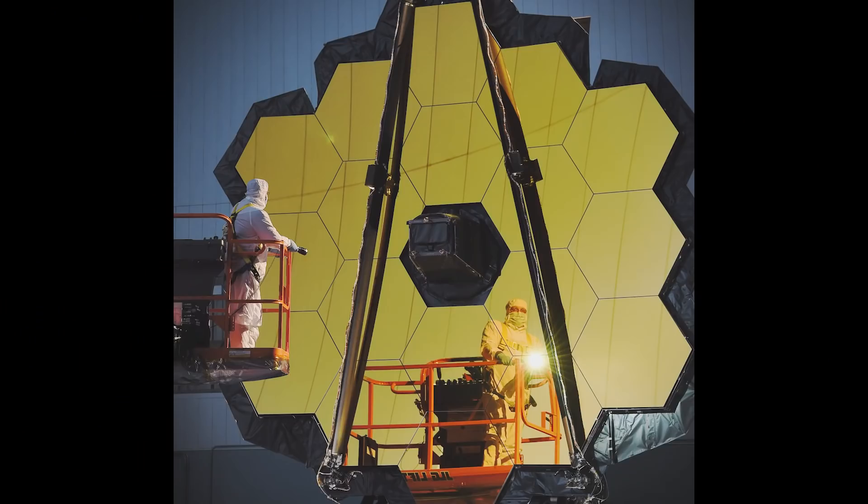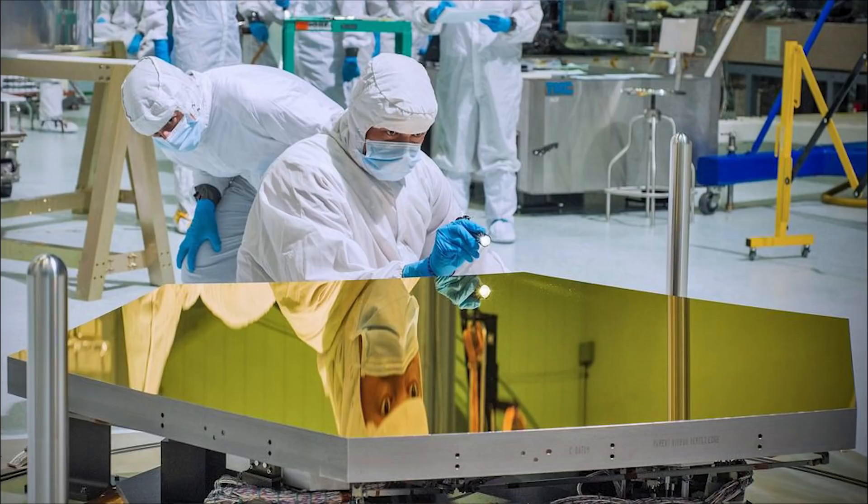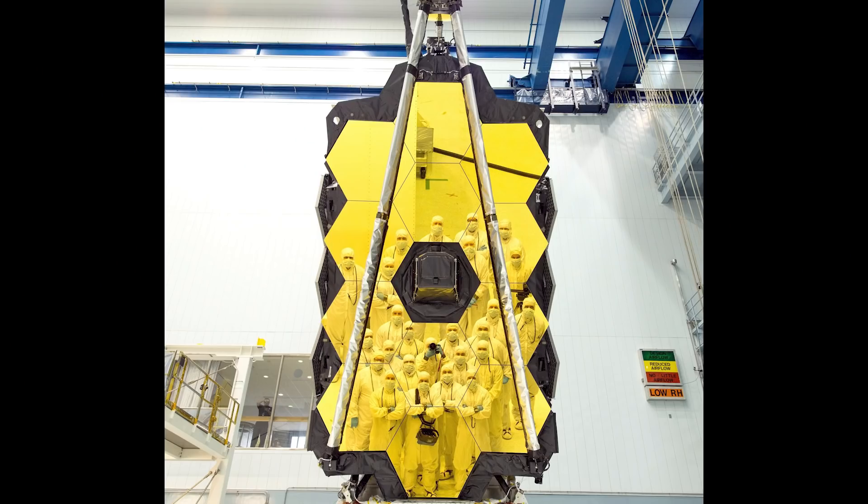High stakes because the thing cost over 10 billion dollars, and if it had failed at this point, it would have been totally useless and there would have been no real way to fix it. In order to achieve this incredible unfolding feat, the mirror was made of 18 individual hexagonal segments that should eventually function as one perfect mirror.